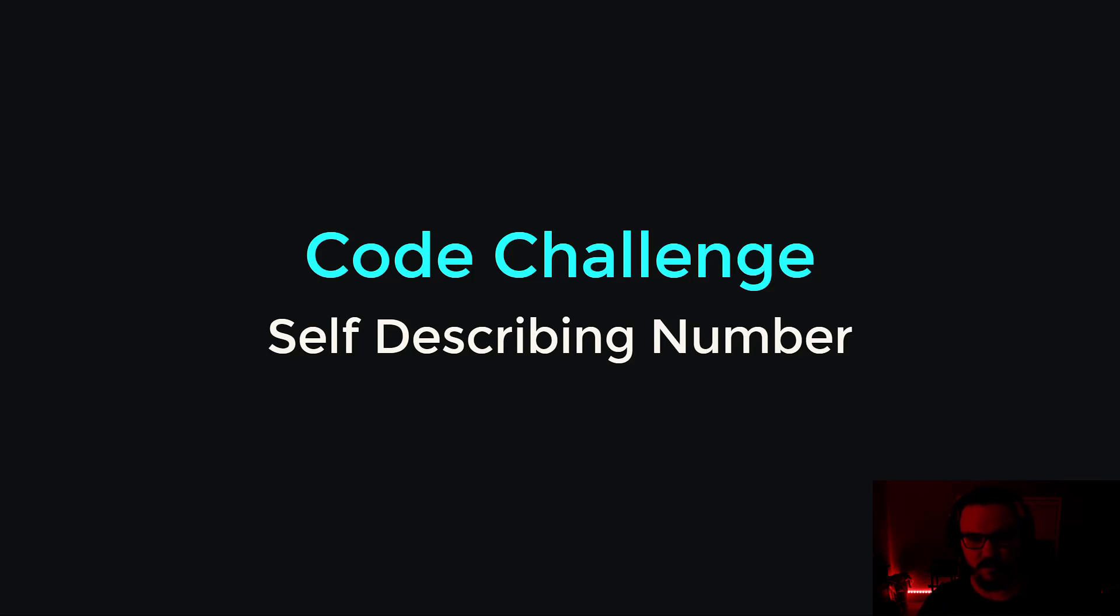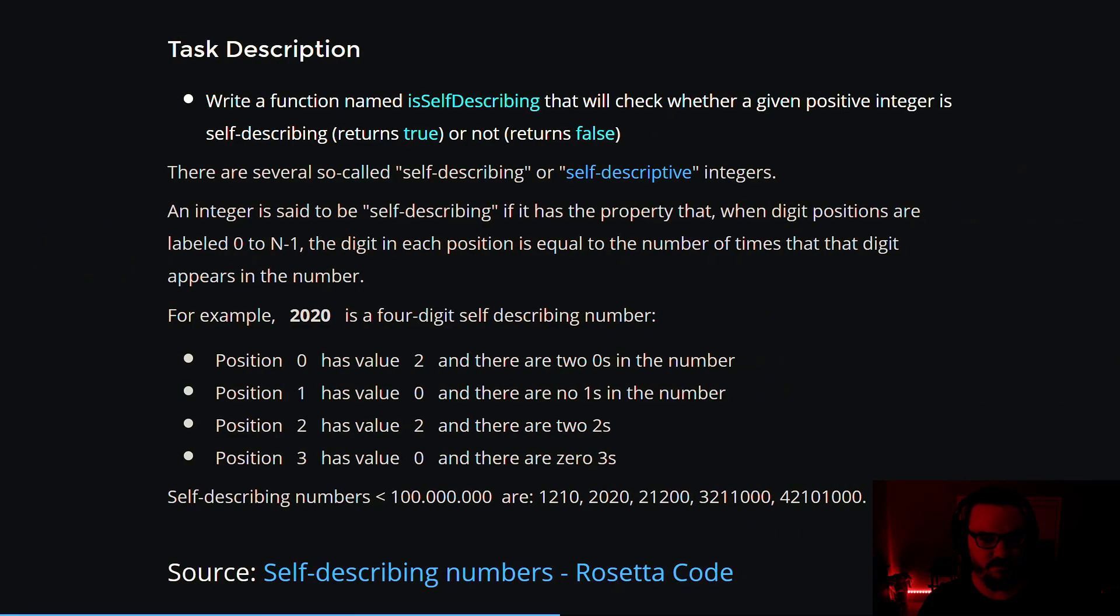This is called self-describing number and this is taken from a website called Rosetta code. I will share a link to the slides in the description and a link directly to the Rosetta code website where I found this exercise.